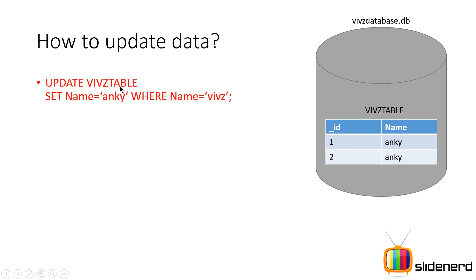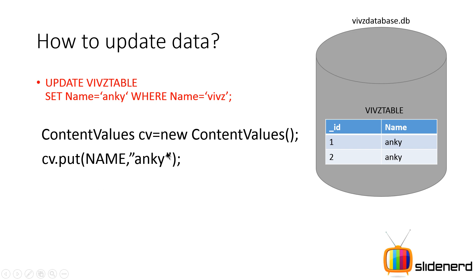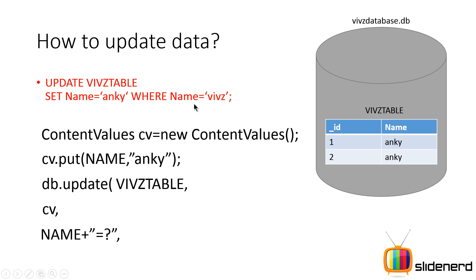For the update, the plain SQL is: UPDATE vips_table SET name = 'Anki' WHERE name = 'Vips'. In code, first create a ContentValues object and put the new value — cv.put("name", "Anki"). Then call db.update(), passing the table name (vips_table), the ContentValues object, the WHERE clause (name = ?), and the WHERE args (new String[]{"Vips"}). This translates to: update vips_table with the new value in cv where the name column contains 'Vips'.